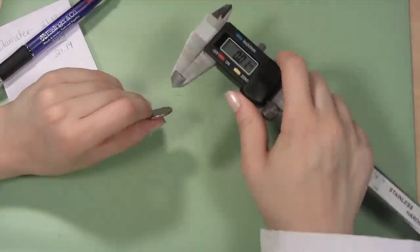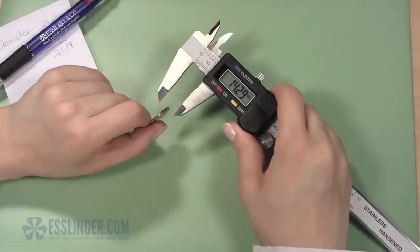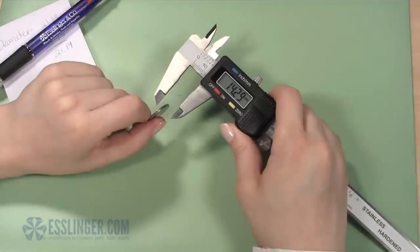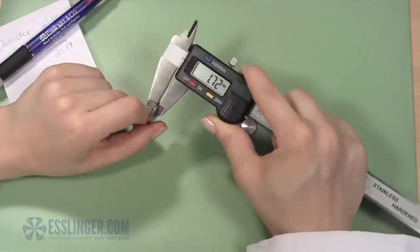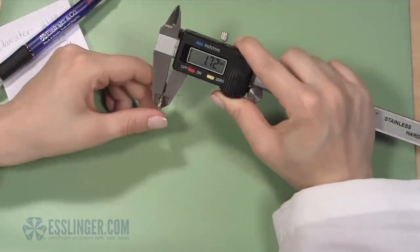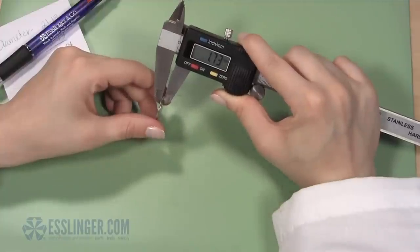Take your digital gauge in your free hand and open the jaws wider than the thickness of the coin. Position the open jaws of the gauge on either side of the coin and close them until the gauge grips the coin securely. Record the thickness.